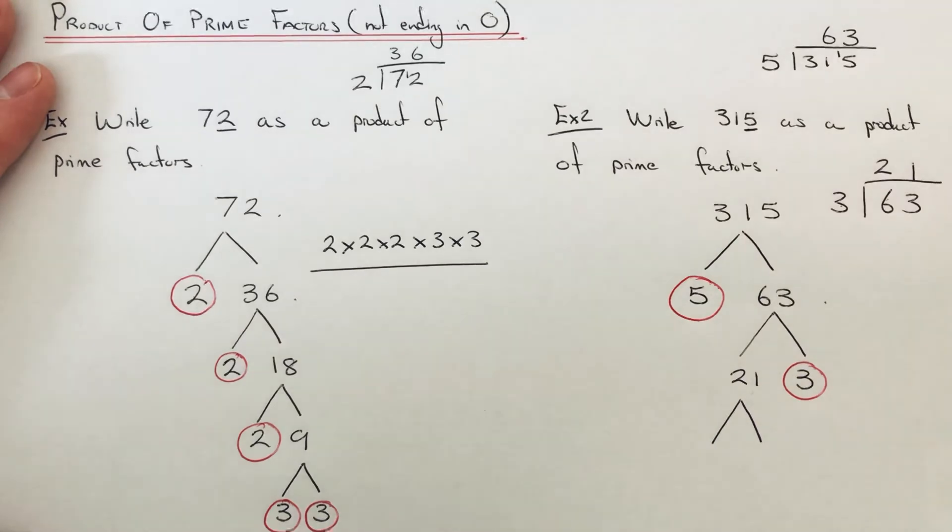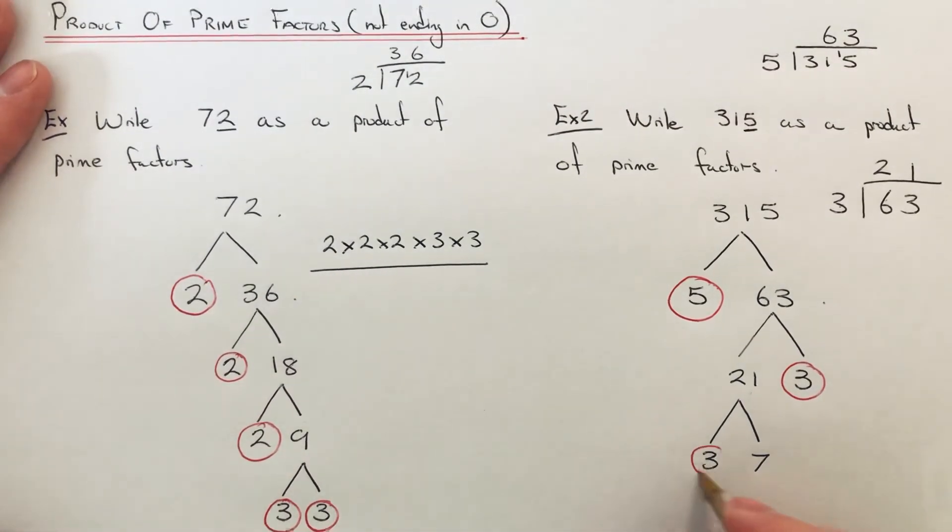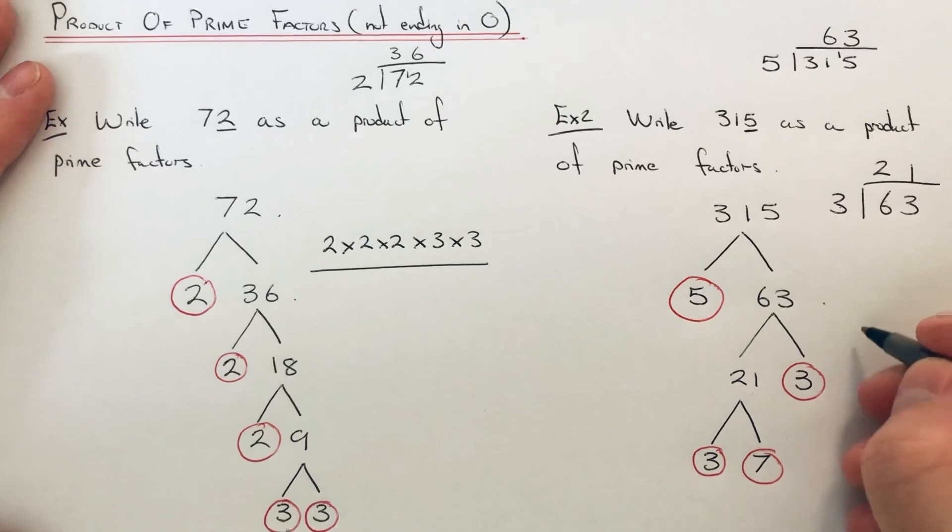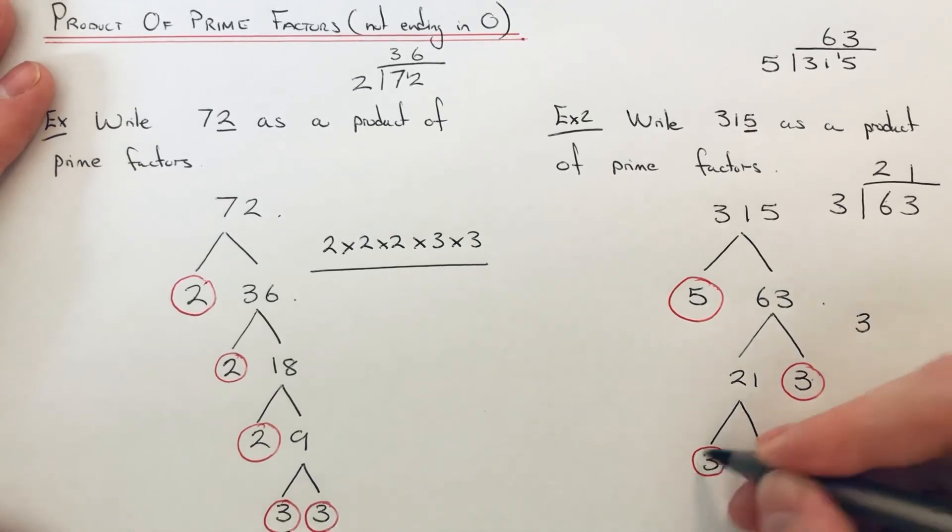We can't split any more numbers that multiply to give 21. 3 goes into 21, so 3 times 7. 3 is prime, 7 is prime. We can't split any more numbers up now, so my product of prime factors will be 3 times 3 times 5 times 7.